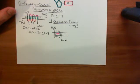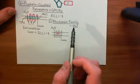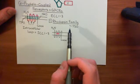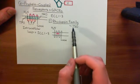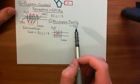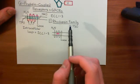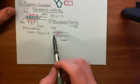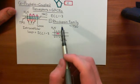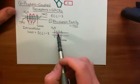The first family of G-protein coupled receptors is the rhodopsin family. Of the approximately 800 G-protein coupled receptors in humans, around 750 of these are rhodopsin family G-protein coupled receptors, making this a very large family. The characteristic feature is that they bind their ligand in the extracellular one-third of the transmembrane domain.